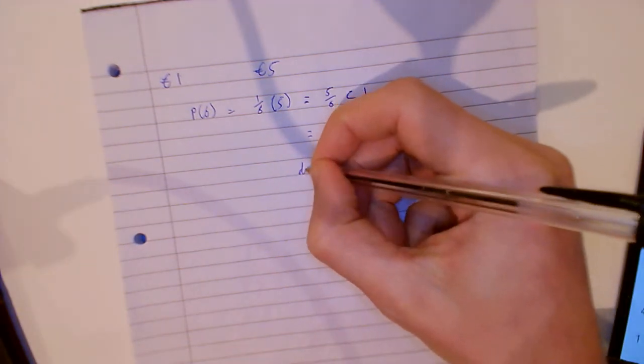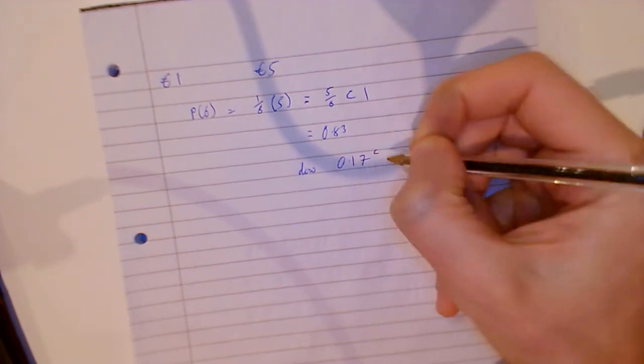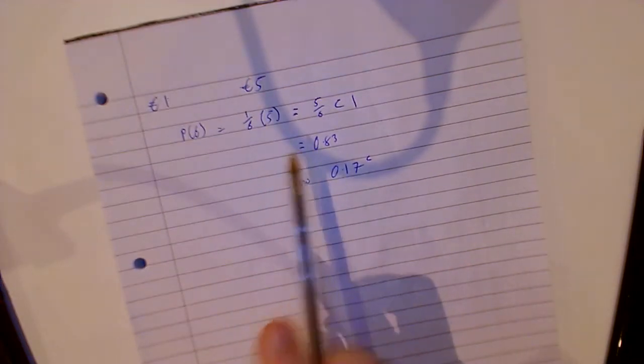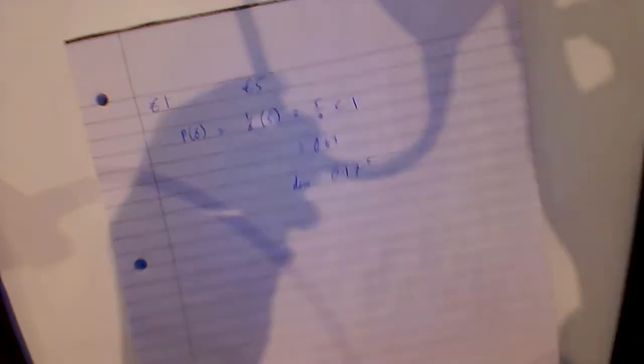Is that game fair? No, we are down 17 cent per game. They are making 17 cent per game. Now we did a similar one and we flipped it around. It was one euro to play but you win seven euro. We'd be up money per game. Is that now fair? No. No game is fair unless, in that one, you won six euro. So no game that you'll see in a casino is fair.